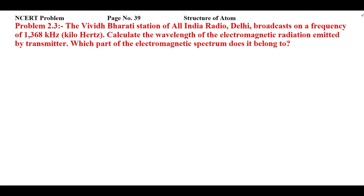In this question, they have given you a frequency on which the Vivid Bharti station of All India Radio Delhi is broadcasting. You have to find the wavelength of this particular electromagnetic radiation emitted by the transmitter, and also tell about the electromagnetic spectrum to which it belongs. For this, we'll use the formula lambda equal to c by nu.